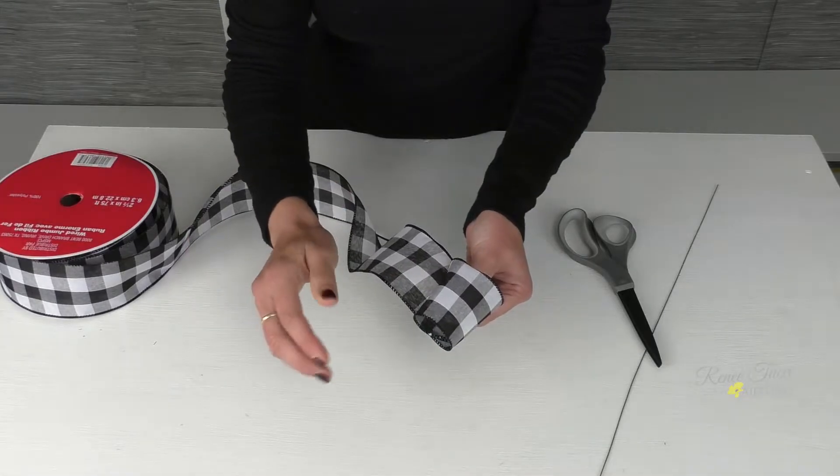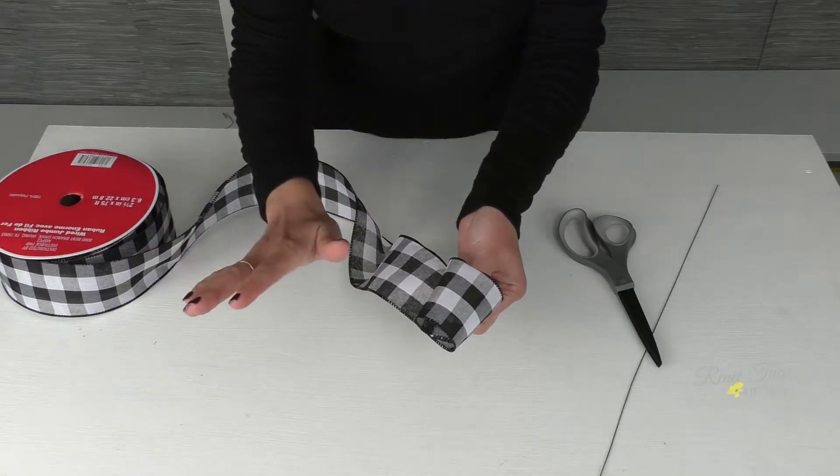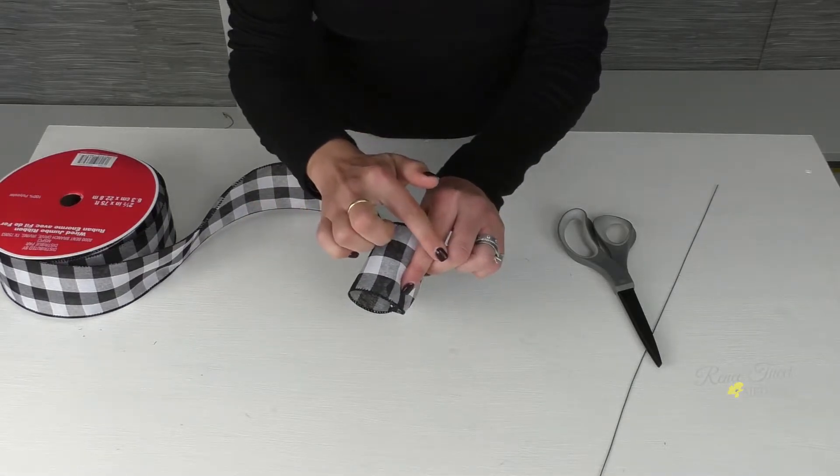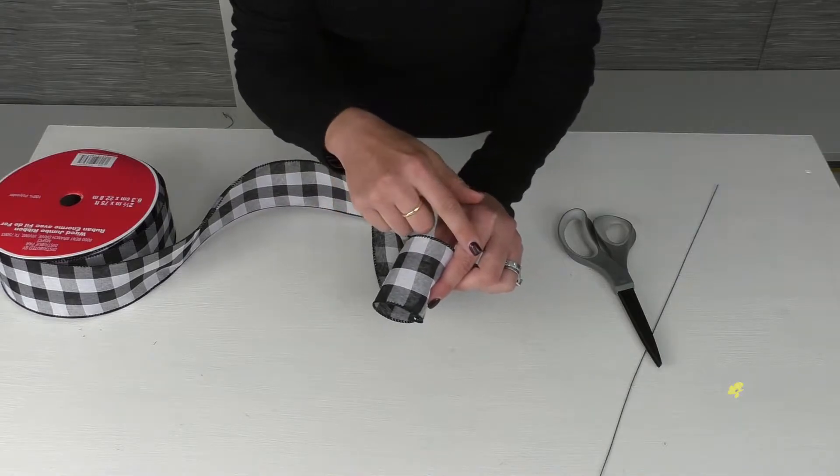Now, I am right-handed, so that means I'm going to hold the ribbon with my left hand. The right hand is going to do all of the work, and the left hand will simply open and close to allow each new loop to come in.